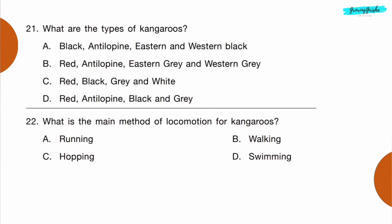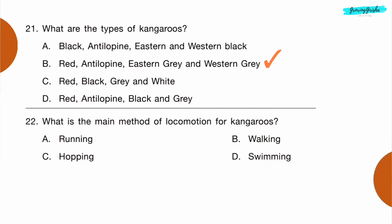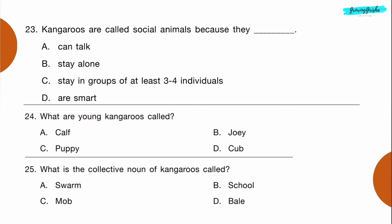For questions 21 to 25, read the passage and answer the questions that follow. Question 21: What are the types of kangaroos? Question 22: What is the main method of locomotion for kangaroos? Option C: hopping.